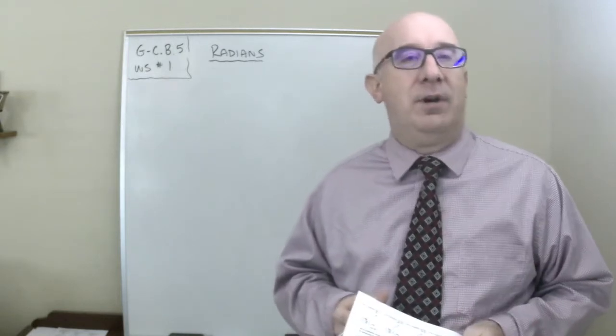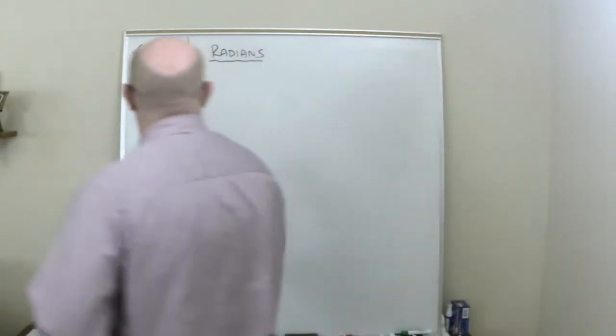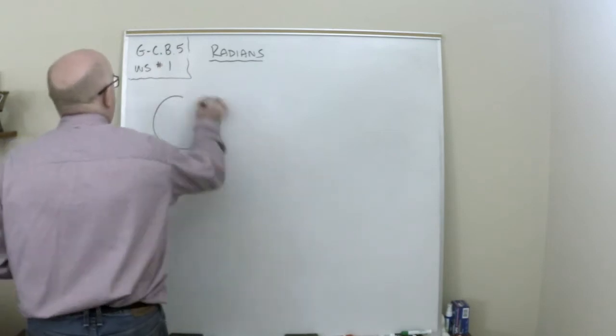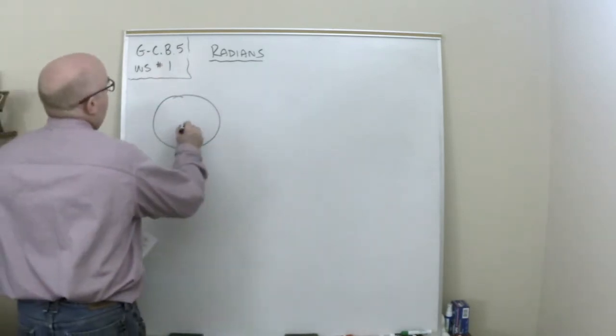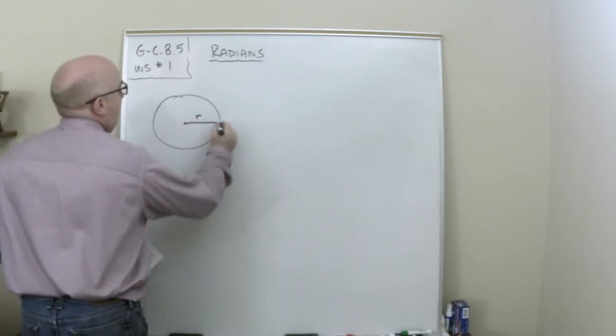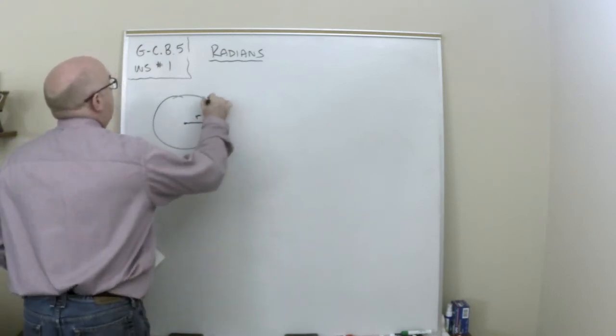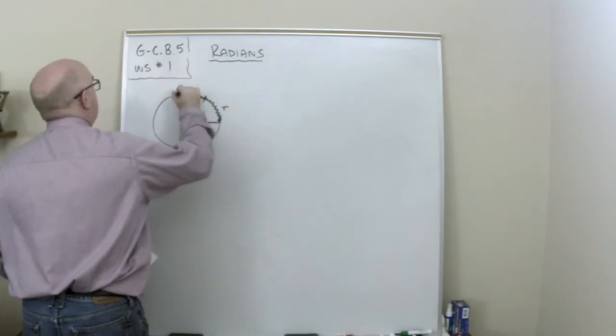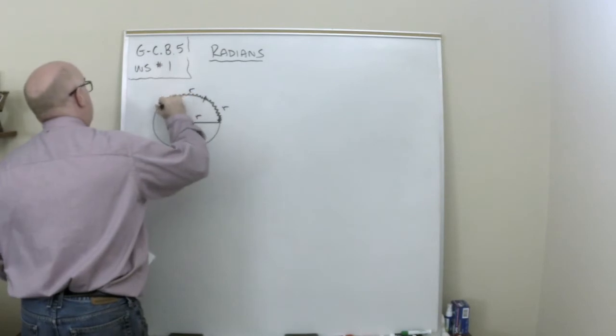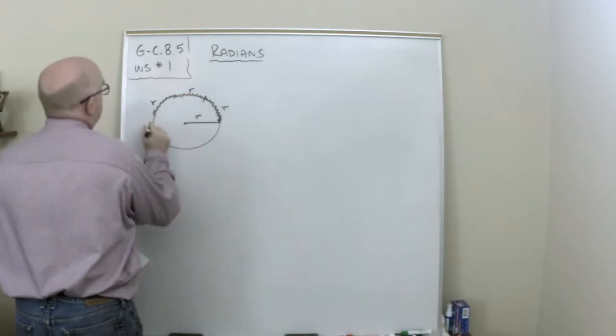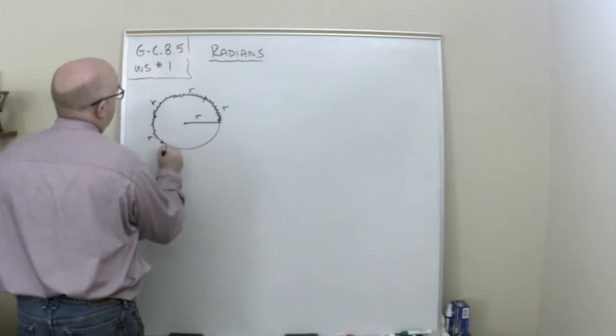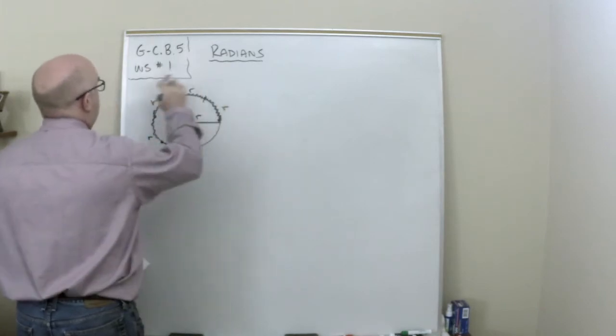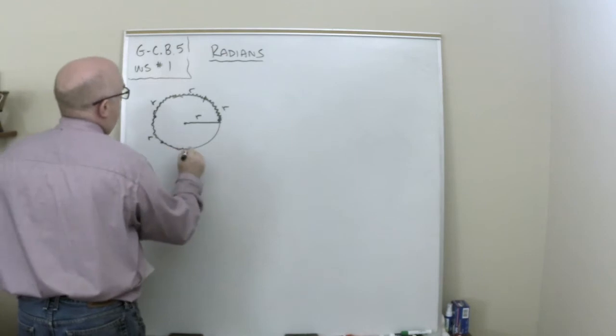So you might have already done a little bit of work with this and one of the activities to get here. But let me just talk a little bit about this idea. If you take your radius right here and you start wrapping it around your circle here, you're going to get something that looks like this here. What do we got? One, two, three, four, five.